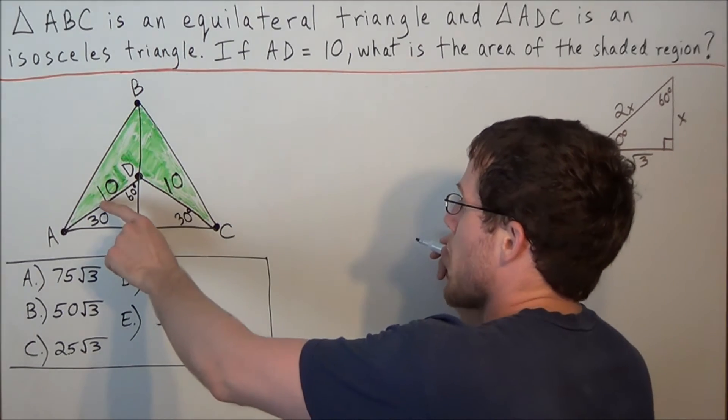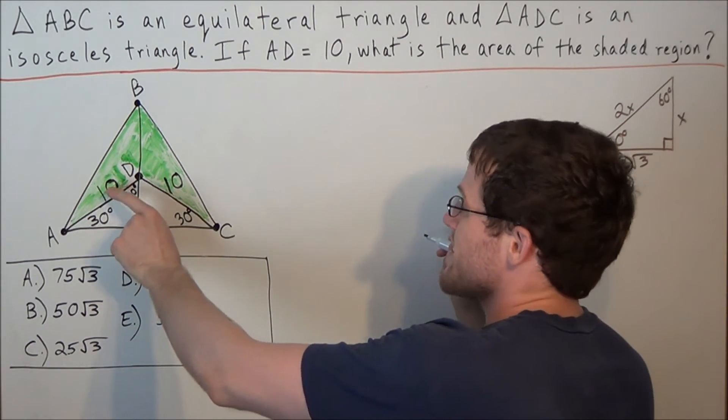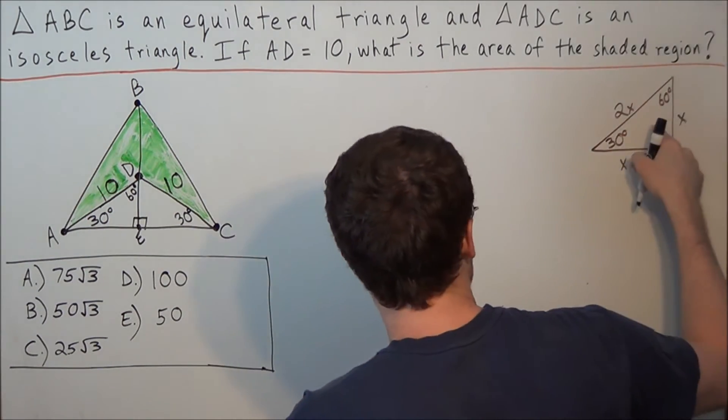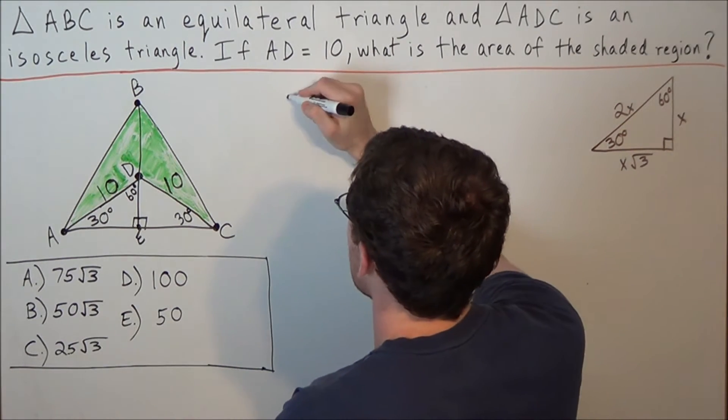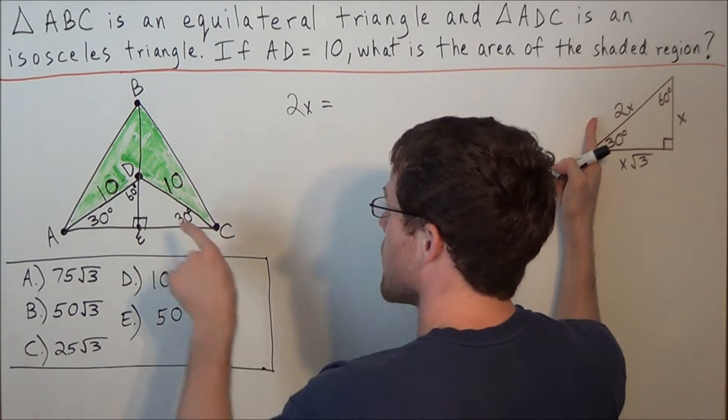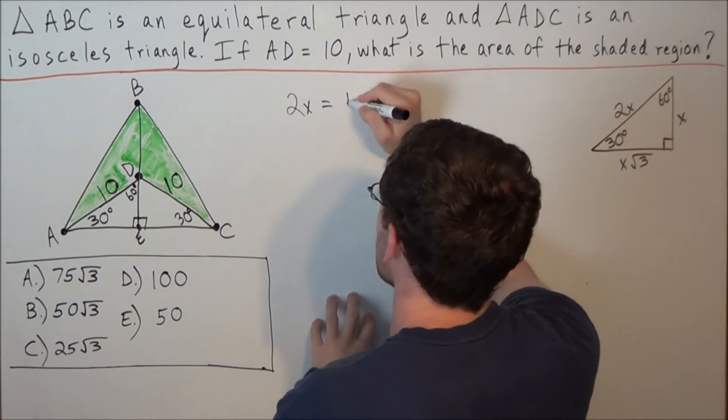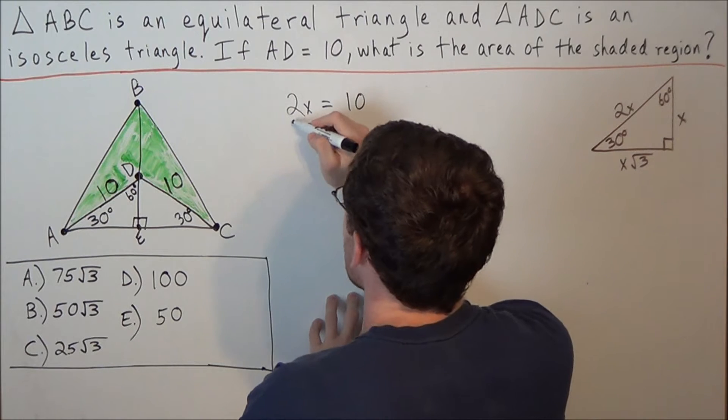So for this example, we have the hypotenuse of our triangle is 10 units long. And in general, in the 30, 60, 90 triangle, we could represent the hypotenuse as 2x. So we're going to set 2x equal to our hypotenuse of 10. And now solving for x tells us that we have x equals 5.